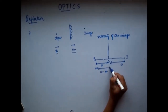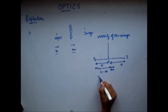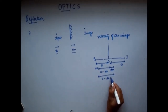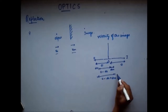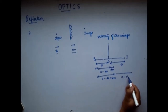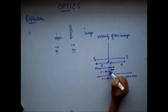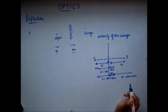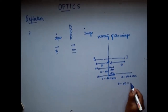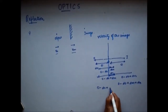The mirror has also moved a distance dm due to its velocity. So the distance between the mirror and the object is now o minus dO plus dm. The image will be formed at the same distance from the mirror, so the image is at o minus dO plus dm from the mirror. The distance of the image from the original reference line is therefore o minus dO plus dm plus dm, which is o minus dO plus 2dm.